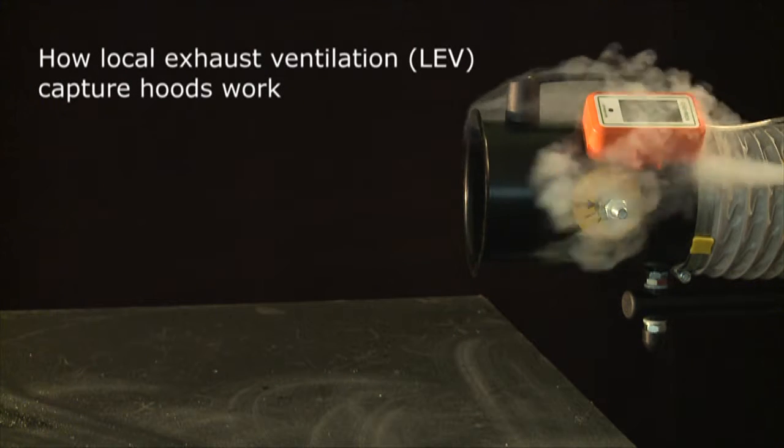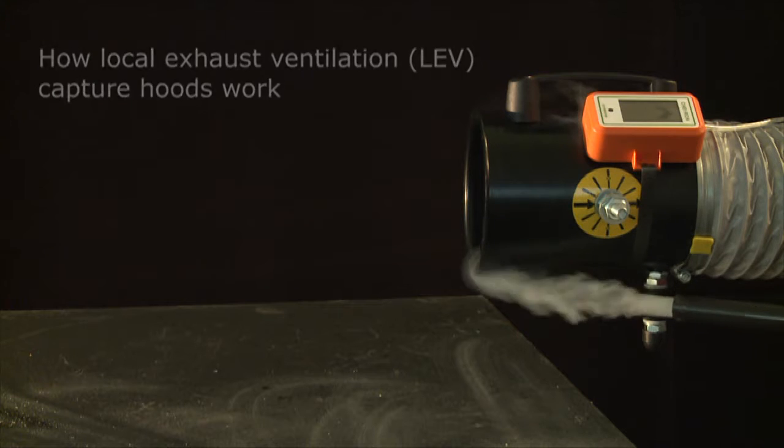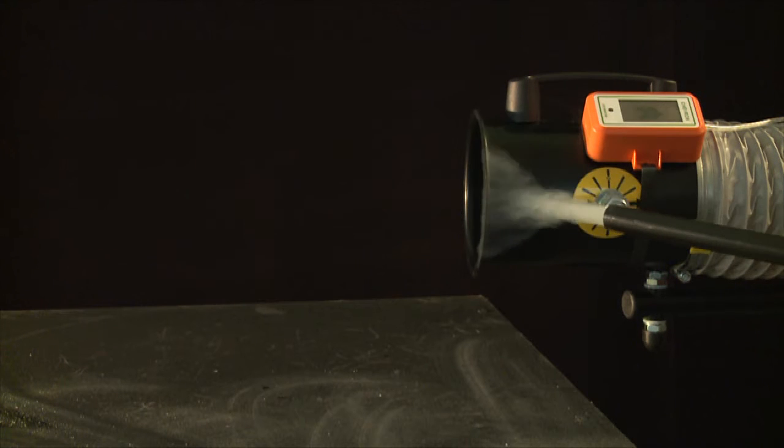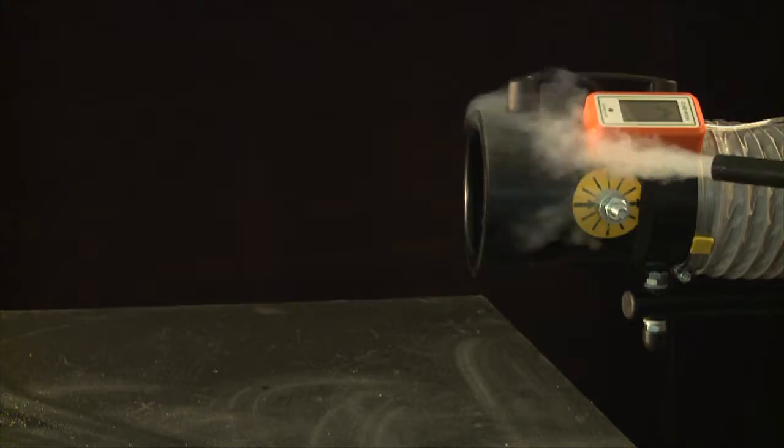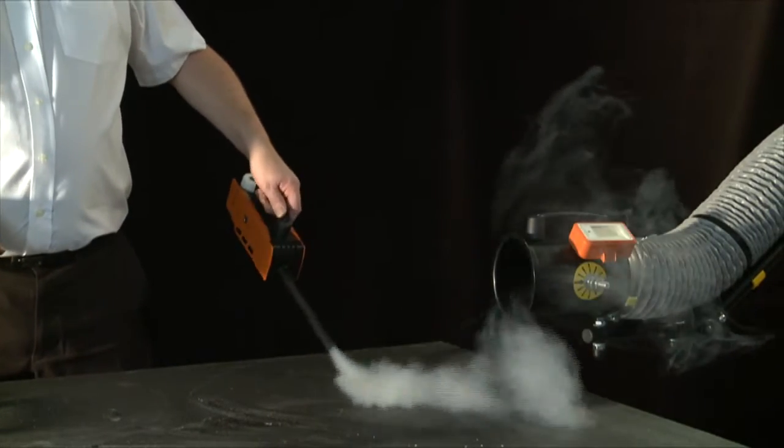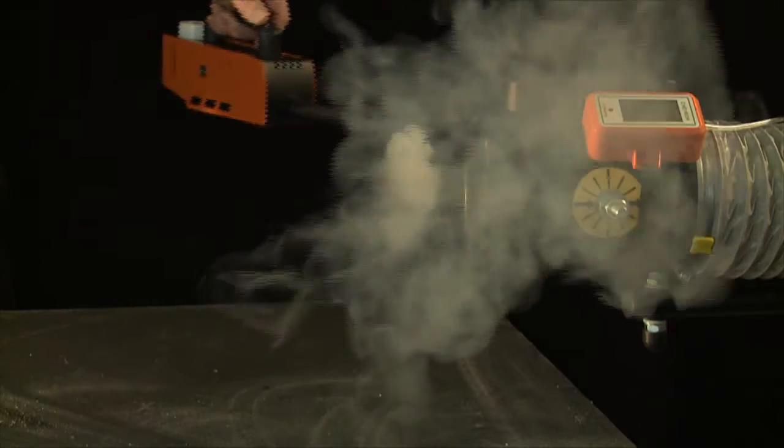Here, we're using an open duct as a capturing hood, and the smoke shows that the airflow contours extend around the back of the hood. With the source at the front of the hood, such airflow is wasted. It has no effect on control.